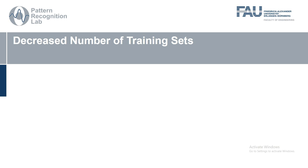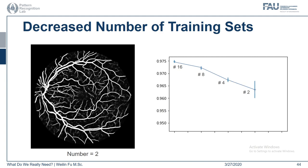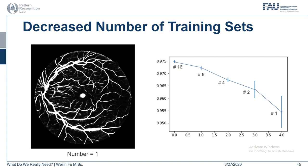Finally, what if we decrease the number of training sets? The intuition is that the model is more prone to overfit if we train with less data. We indeed observe a uniform performance decrease and standard deviation increase with reduced training data. With only one training image, the network somewhat captures the vascular structures, but is severely influenced by the background data distribution.